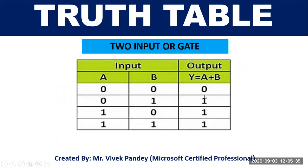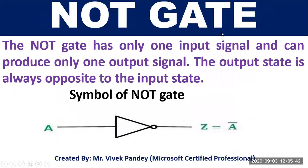What is a NOT gate? The NOT gate has only one input signal and can produce only one output signal. The output state is always opposite to the input state. This is the symbol of the NOT gate — if the input is A, then our output will be A bar.